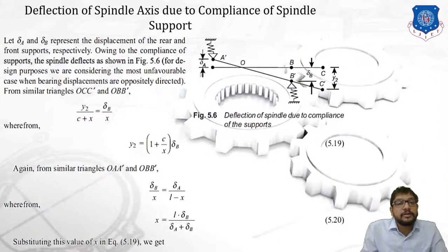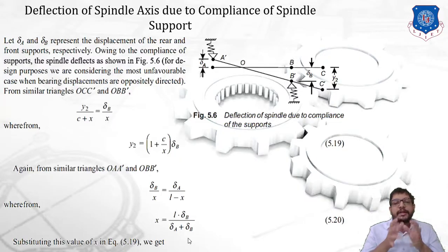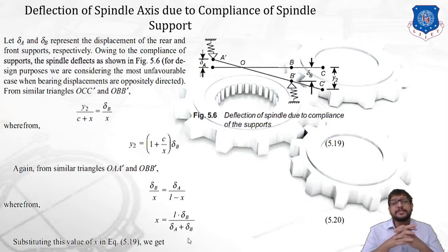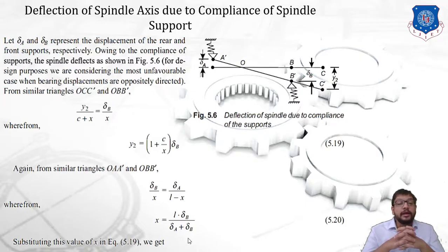Next, we consider deflection of the spindle axis due to compliance of the spindle support. Let δ_a and δ_b represent the displacements of the rear and front supports respectively due to compliance of the supports. The spindle deflects as shown in the diagram. For design purposes we consider the most unfavorable case where bearing displacements are oppositely directed. From similar triangles OCC' and OBB' we obtain: y2 / (c + x) = δ_b / x, giving equation 5.9.